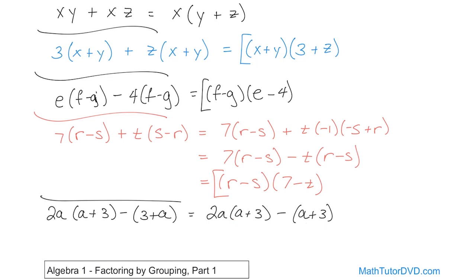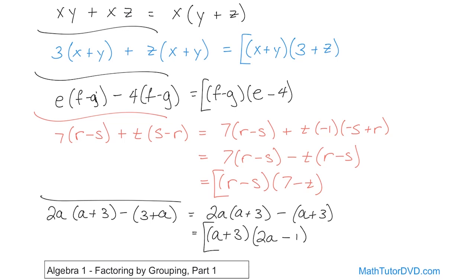Then I have a common term a plus 3 here and a plus 3 here. So I factor out a plus 3, and open up another set of parentheses. When I factor it out from the first term, I'm left with 2a. When I factor it out from the second term, there's just a 1 there — but with the minus sign it becomes minus 1. So the result is a plus 3 times the quantity 2a minus 1. You can verify: multiplying through by 2a gives the first term, and multiplying by negative 1 gives the second.